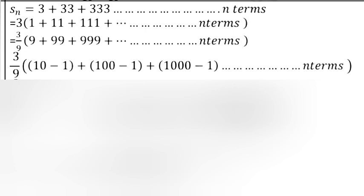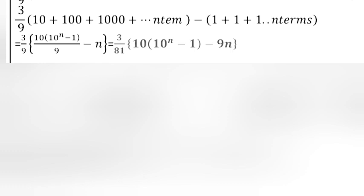= (3/9)[(10 - 1) + (100 - 1) + ... n terms] = (3/9)[(10 + 100 + 1000 + ... n terms) - (1 + 1 + 1 + ... n terms)]